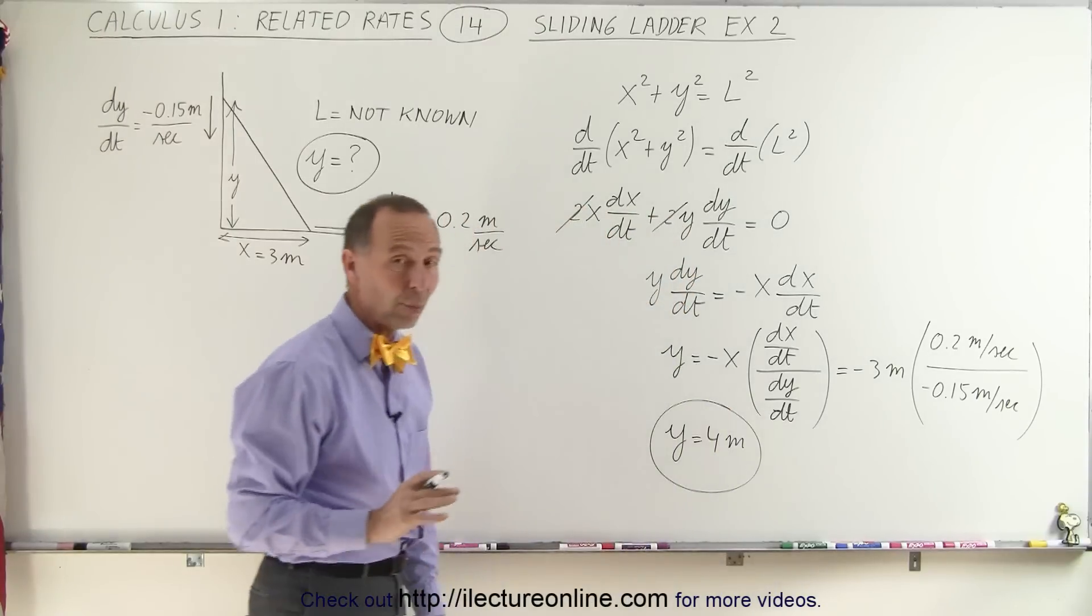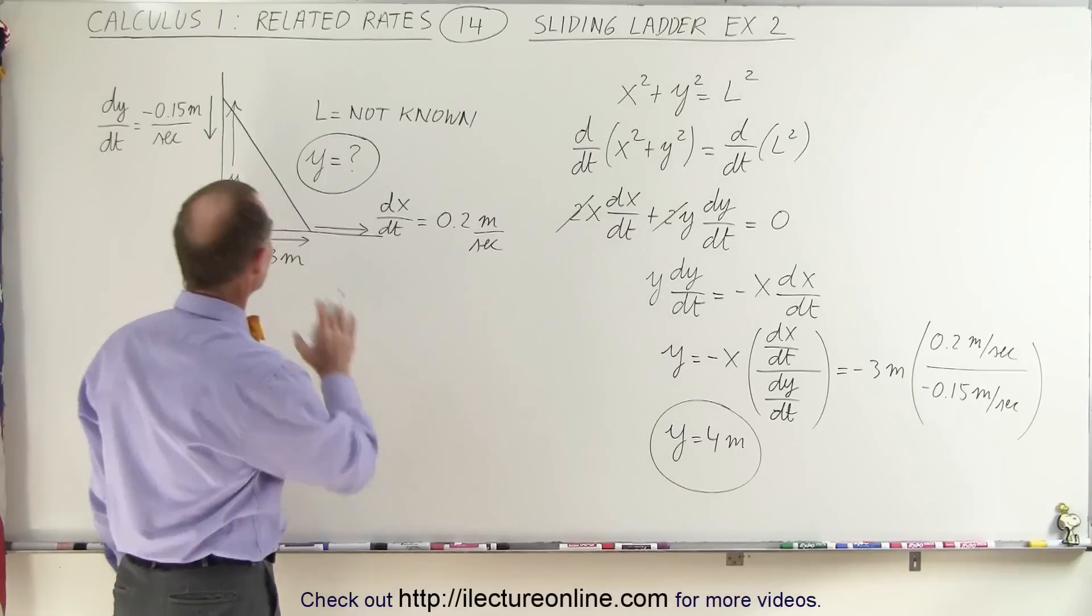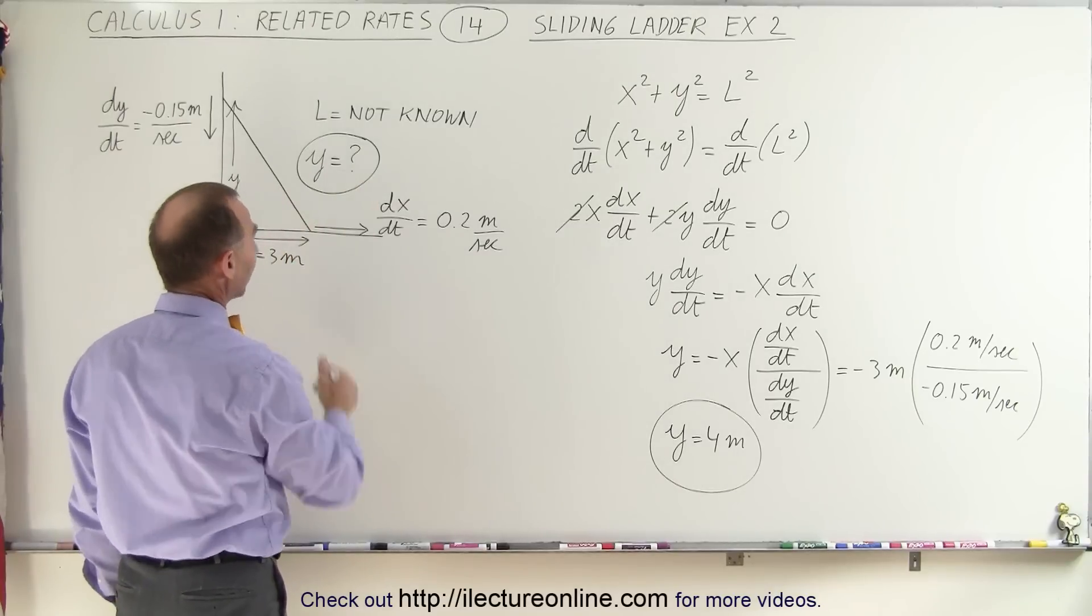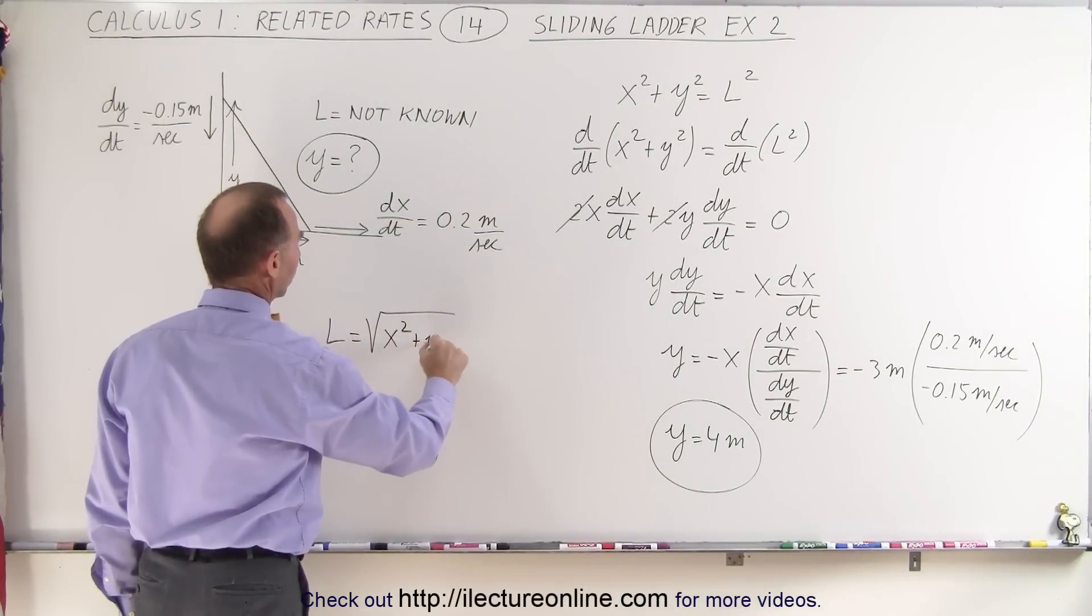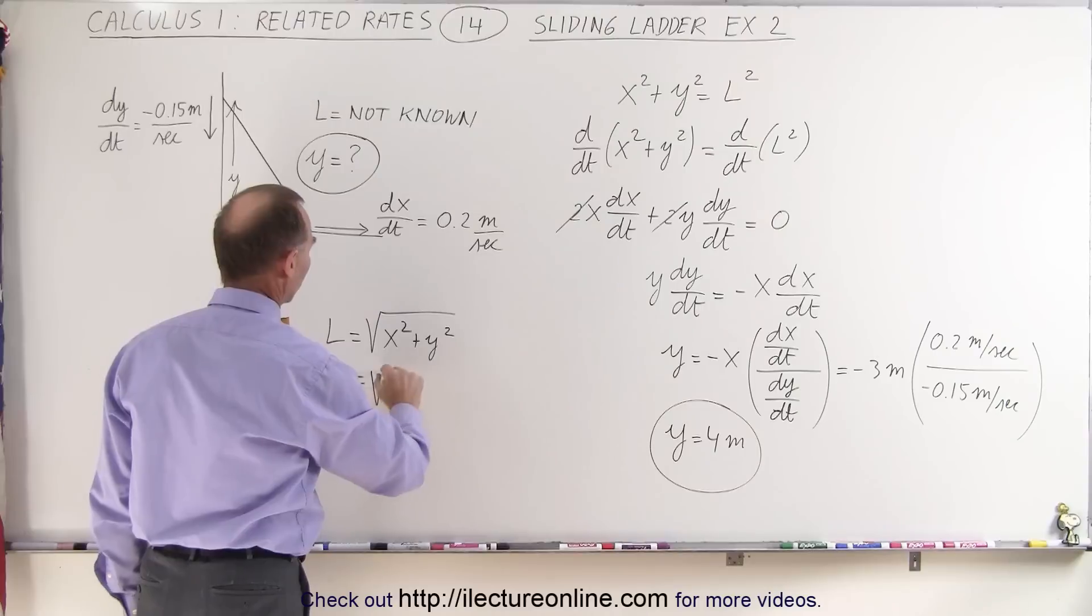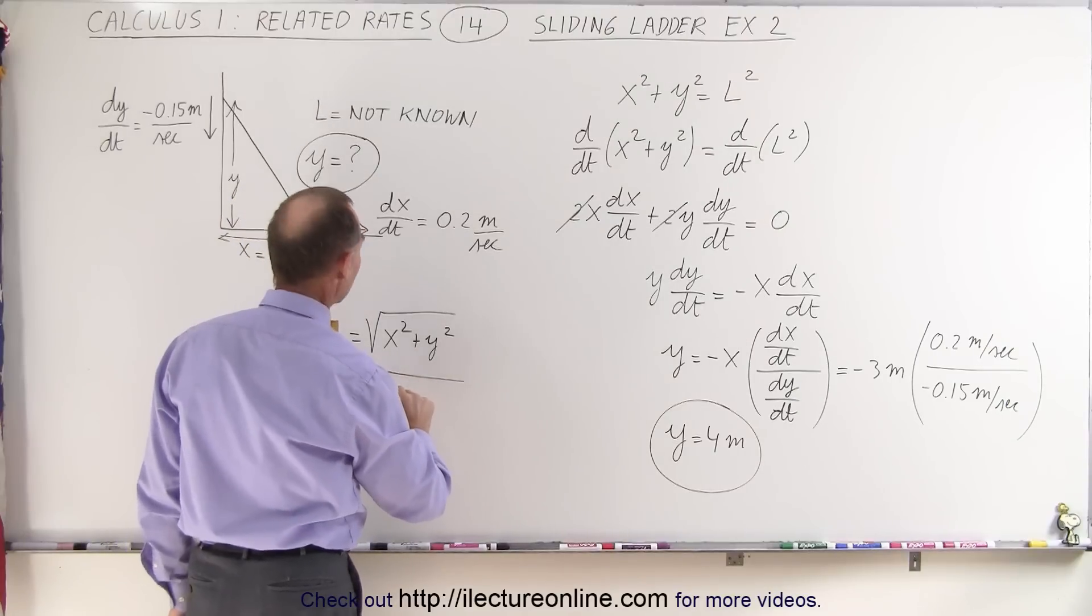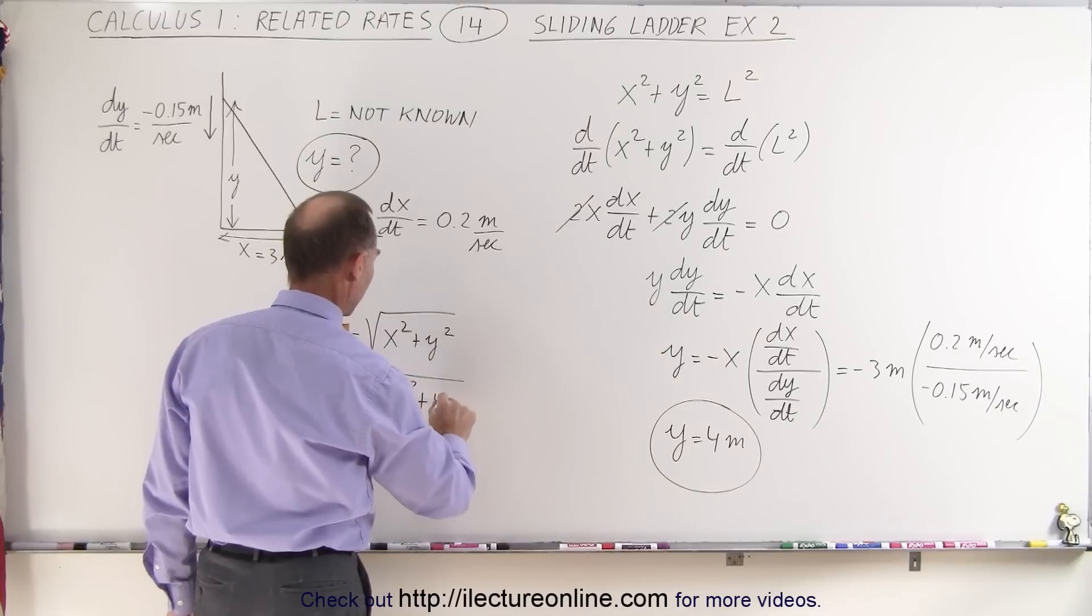And since we now know what x and y are at that very moment in time, we can now also find the length. We know that the length equals the square root of x squared plus y squared. And so this becomes the square root of x being 3 and y being 4.